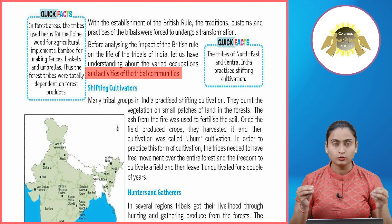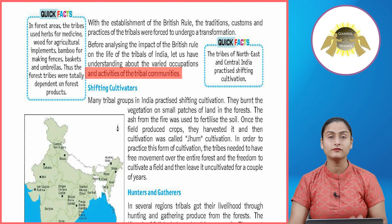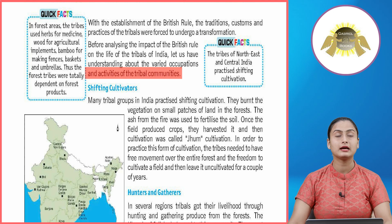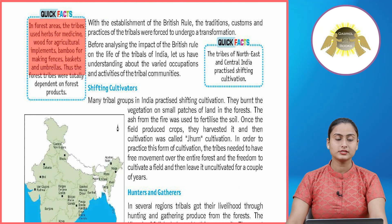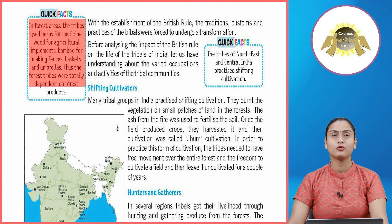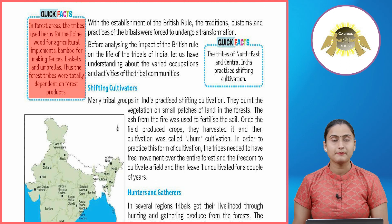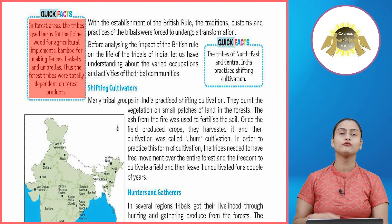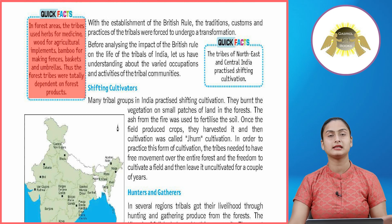Quick facts: in forest areas, the tribes used herbs for medicine, wood for agricultural implements, bamboo for making fences, baskets, and umbrellas. Thus the forest tribes were totally dependent on forest products. The tribal people living near or in forests made different implements from wood, prepared medicines, and were completely dependent on the forest for their sustenance.